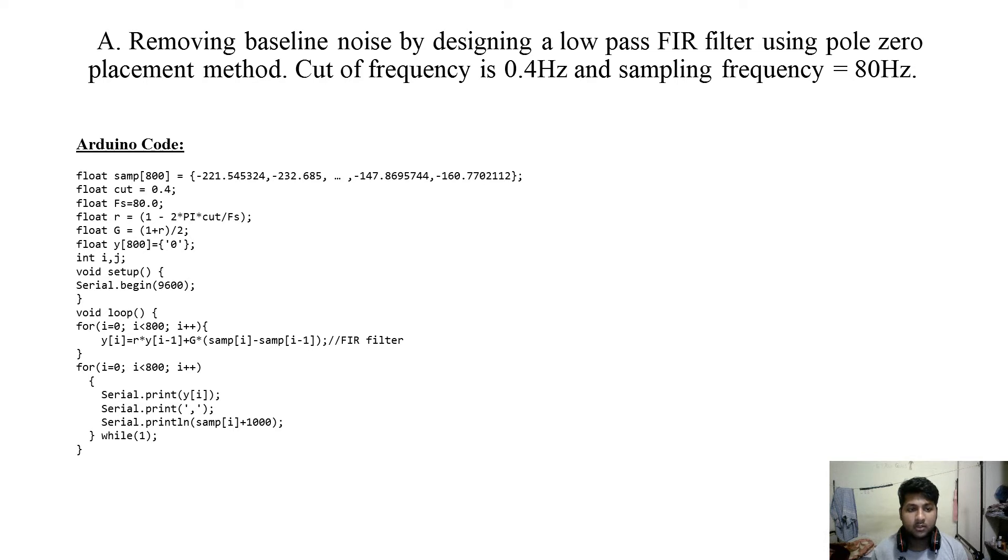In this first question we will look at removing baseline noise by designing a low pass filter. So first we will take the sample and create a radius. The point at which we will put our pole is at a distance of r, and r is defined as 1 minus 2π cutoff frequency divided by sampling frequency, and thus we will get the value of r.